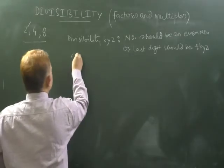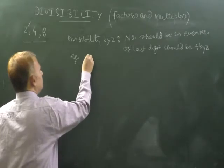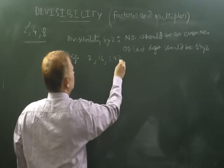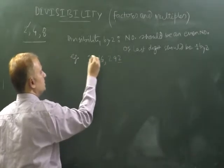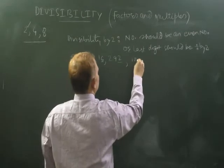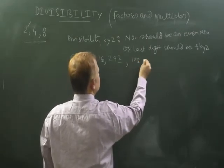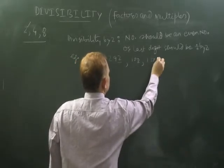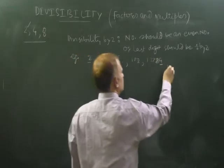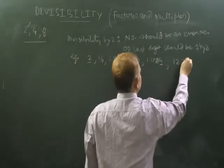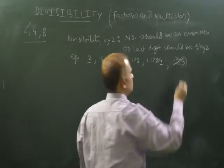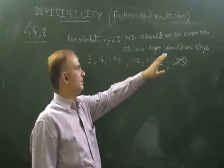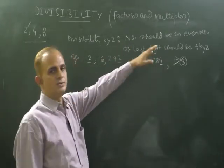For example: 2, 16, 92 — these are divisible by 2. 200 is divisible by 2 because 0 is divisible by 2. 12784 is divisible by 2. But 123 is not divisible by 2 because 3 is not divisible by 2. So for divisibility by 2, the number should be even, or the last digit should be divisible by 2.